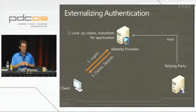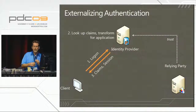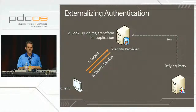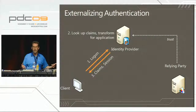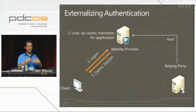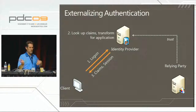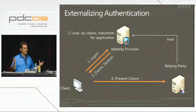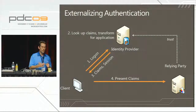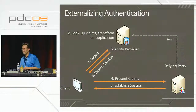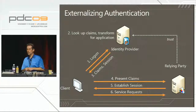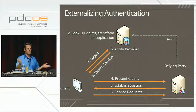The identity provider also establishes a session — in the web case, usually an HTTP cookie. If I go to a different relying party, that cookie is already there so I don't re-authenticate. It generates a new set of claims for the new target and I'm bounced back. Those claims are presented to the relying party, which must verify the security token cryptographically, extract the claims, establish a session with ASP.NET HTTP cookies, and then handle requests.